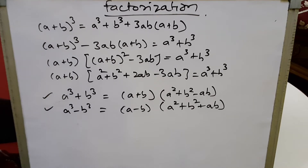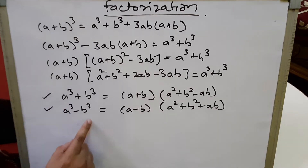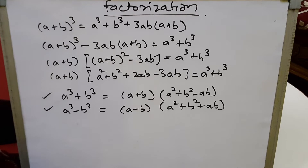We need to remember these two identities: the sum of two cubes and the difference of two cubes. The sum of two cubes: a³ + b³ = (a+b)(a² + b² - ab). The difference of two cubes: a³ - b³ = (a-b)(a² + b² + ab). We will use these to factorize the sums in this exercise.